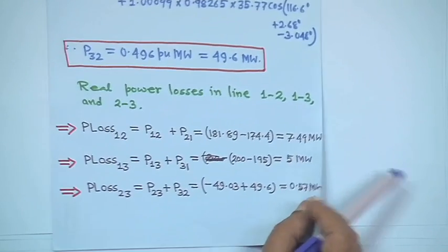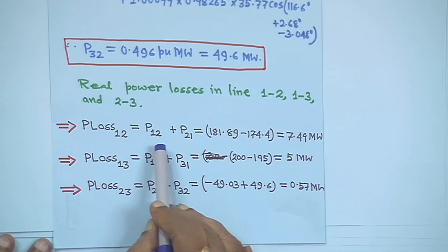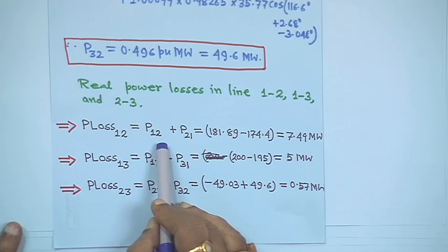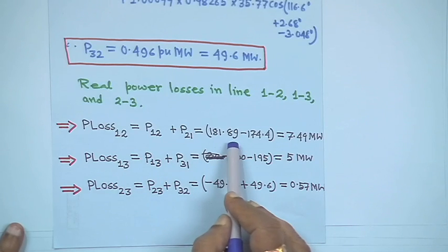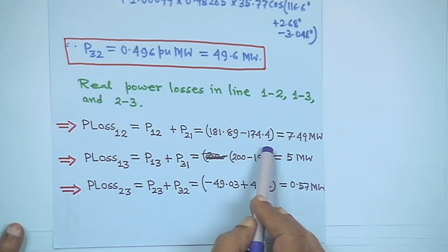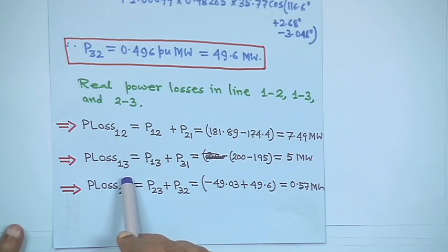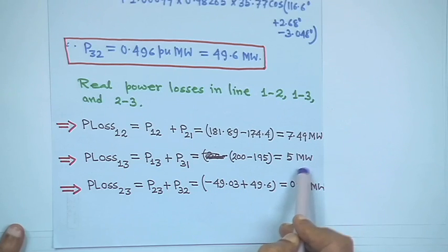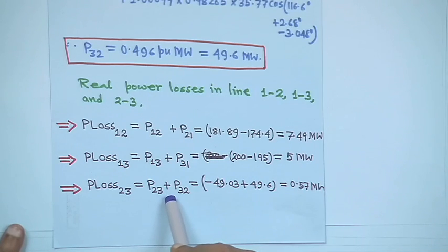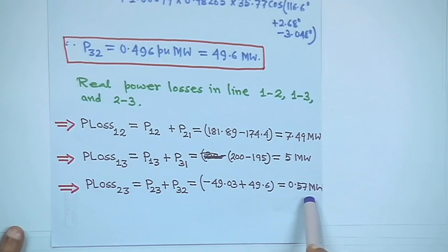Real power losses in lines 1-2, 1-3, and 2-3: P_loss₁₂ is equal to P₁₂ plus P₂₁, that is 181.89 minus 174.4, giving 7.49 megawatt. Similarly, P_loss₁₃ is P₁₃ plus P₃₁, which is 200 minus 195, giving 5 megawatt. And P_loss₂₃ is P₂₃ plus P₃₂, that is minus 49.03 plus 49.6, giving 0.57 megawatt.